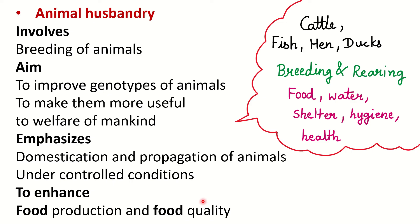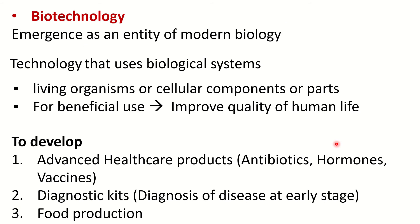Animal husbandry covers cattle such as cows, buffaloes, goats, fish, hens, and ducks — their breeding, mating, and rearing. Rearing involves controlled management of food, water, shelter, hygiene, and health care for the animals.